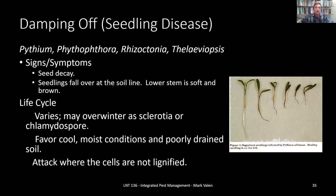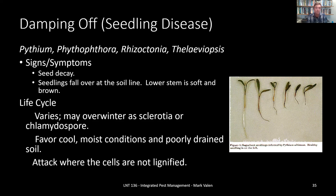Now let's talk about damping off, otherwise known as seedling disease. There are a whole host of organisms that cause damping off — essentially it is seed decay. The seedlings will fall over at the line where they emerge from the soil, and the lower stem will be soft and brown. These organisms have a varying life cycle, tend to favor cool moist conditions and poorly drained soil. They attack the plant where cells are not yet lignified or made woody, which is usually right at soil level and only with seedlings that aren't yet woody enough to resist damping off.